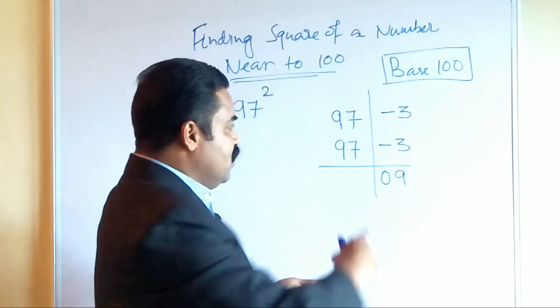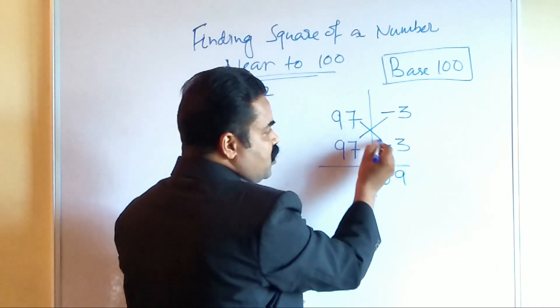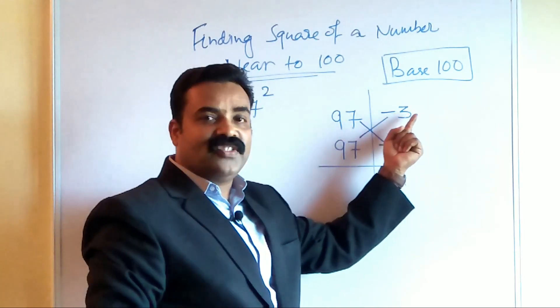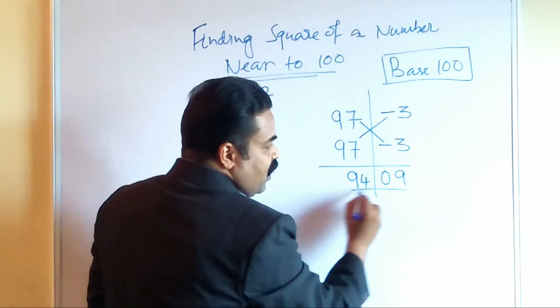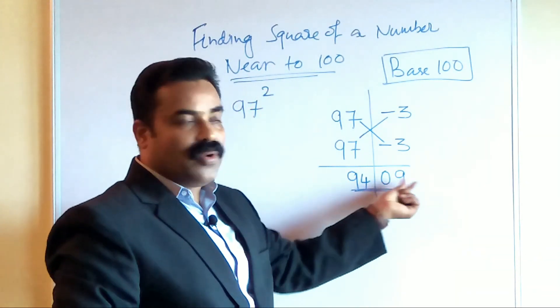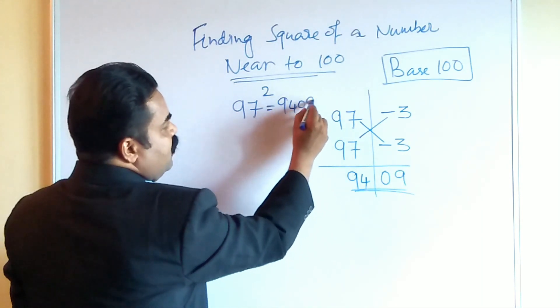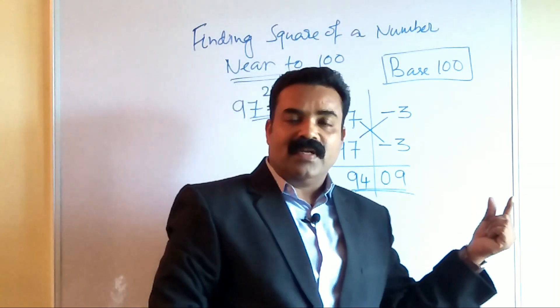And then you have to cross subtract it. 97 minus 3, cross subtraction. What is 97 minus 3? 94. So you can write 94 here. So what answer you got? 9409. So what is 97 square? 9409. This is the method to find out the square of any number near to 100. If you practice it, it becomes very easy. You can solve it even in 2 to 3 seconds.